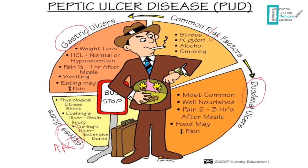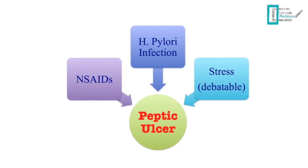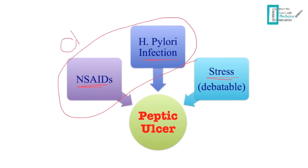Risk factors include stress, H. pylori, alcohol, smoking, and non-steroidal anti-inflammatory drugs. The most common causes are NSAIDs, H. pylori infection, and stress. H. pylori and NSAIDs are considered the chronic type of peptic ulcer disease, while severe trauma or stress causes the acute type.